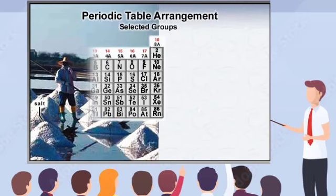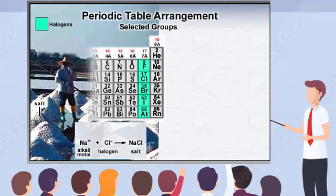At the right side of the periodic table, elements in group 7A are collectively known as halogens. These highly reactive elements are often found combined with other elements as salts. In fact, the term halogen literally translates to mean salt former. For example, chlorine combines with sodium, forming the compound sodium chloride, found in common table and sea salt.